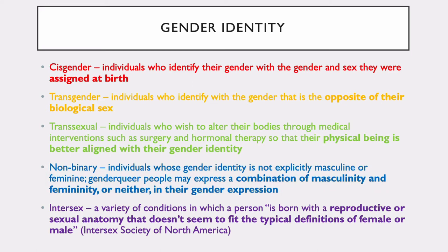Genderqueer people may express a combination of masculinity and femininity, or neither, in their gender expression. And lastly, there's intersex, which is a variety of conditions in which a person is born with a reproductive or sexual anatomy that doesn't seem to fit the typical definitions of male or female.